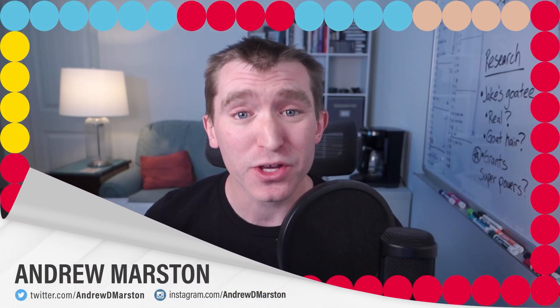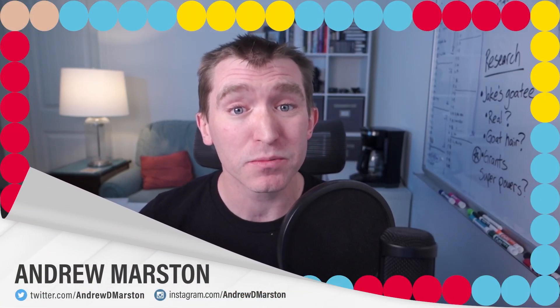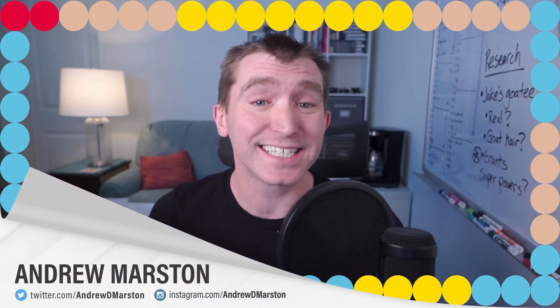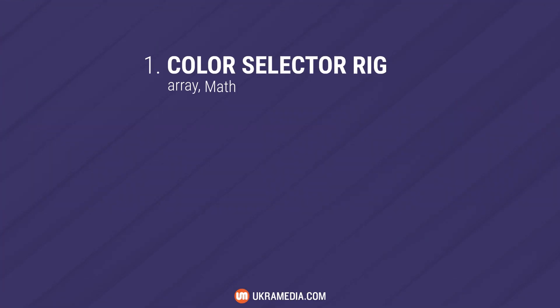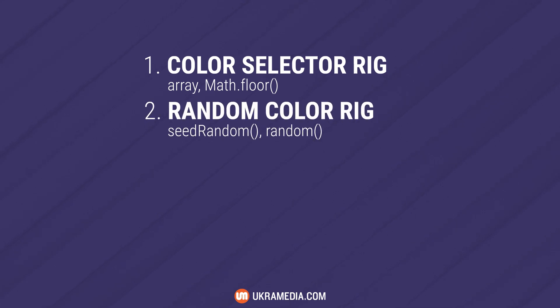Hey everyone, Andrew Marston for the EuchreMedia YouTube channel here. Today in After Effects we're going to be making an expression rig that displays a random color from a specified color palette at an interval that you control. First we'll make a color selector rig using an array and math.floor. Then we'll improve that rig into our final random color generator using the seedRandom and random expressions.